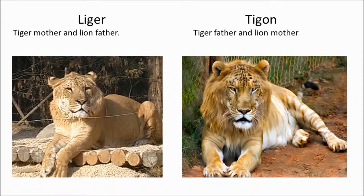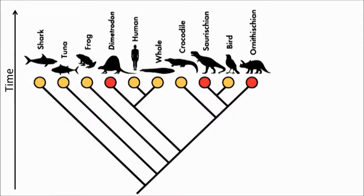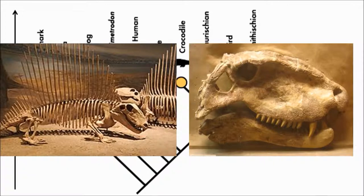Here you can see an evolutionary tree showing how closely related organisms are. Our closest relatives on this diagram are the whales — where the human and whale lines meet, that's our common ancestor. You can see here we are more closely related to a Dimetrodon than a frog. The Dimetrodon is a creature that lived a long time ago and went extinct, I think in the Triassic — many millions of years ago. They belong to a group called the synapsids, looked like reptiles, and had a lot of features in common with today's mammals. They were not dinosaurs as many people think. These evolutionary trees can be really interesting to look at.